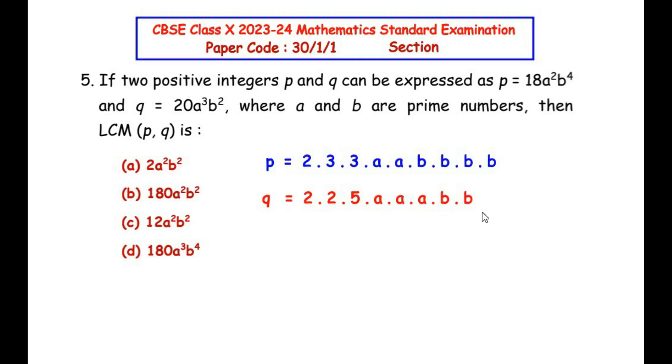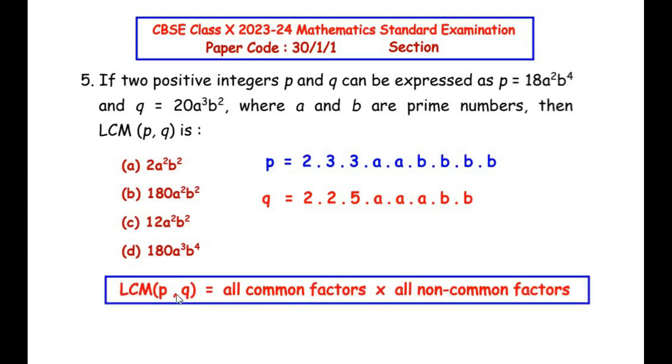Now to find the LCM of p and q, we have a formula which is LCM of any two numbers, in this case p and q, is the product of all common factors with all non-common factors. For all common factors, we have to see which are the common factors between p and q. Let us circle out all the common factors: 2 is a common factor present in p and q, and we have a and a second a which is a common factor, and then we have two b's which are common.